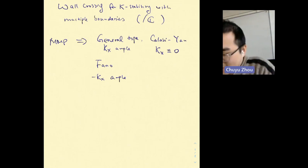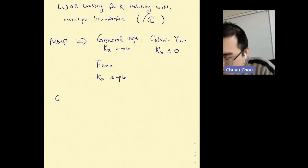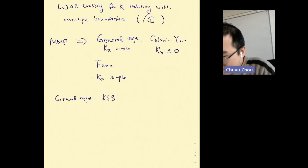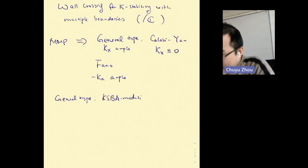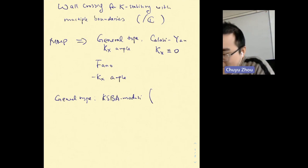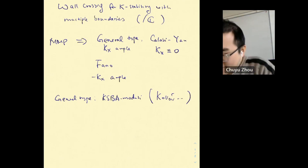We want to construct moduli spaces for these sorts of varieties. For example, for General Type, we already have a good moduli theory called KSB moduli theory, which parametrizes General Type varieties with mild singularity and fixed invariants like dimension and volume. This theory is already complete due to Kollár, Shepherd-Barron, Alexeev, and many other people.